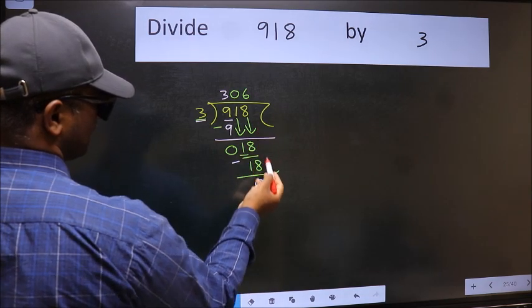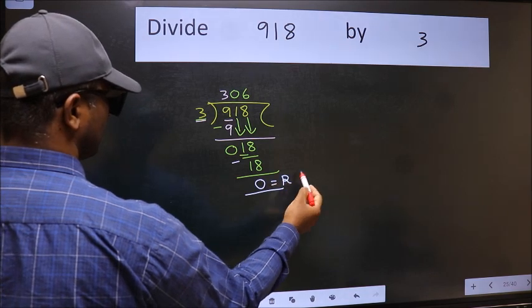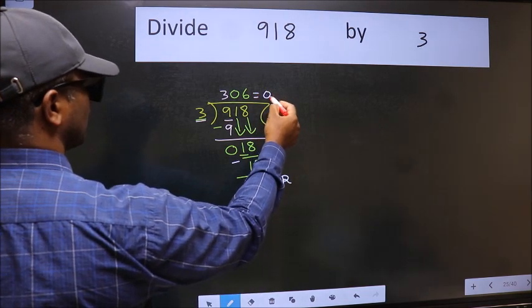No more numbers to bring down. So we stop here. This is our remainder and this is our quotient.